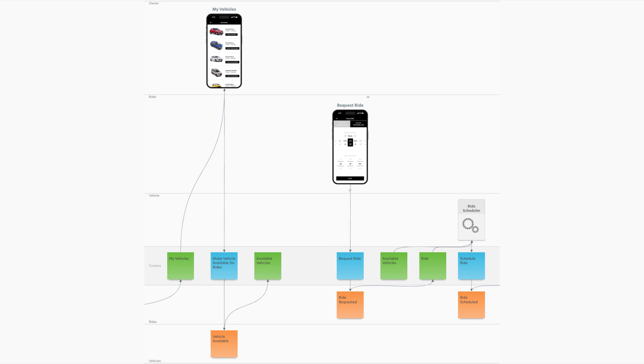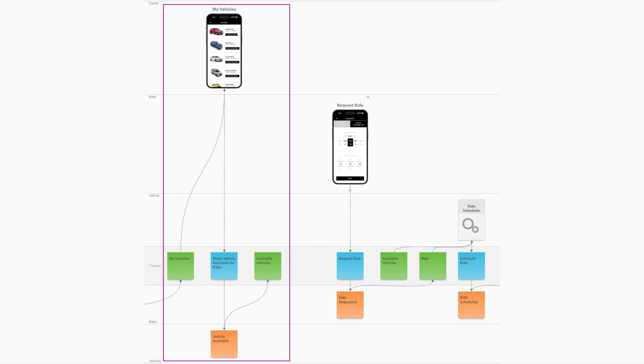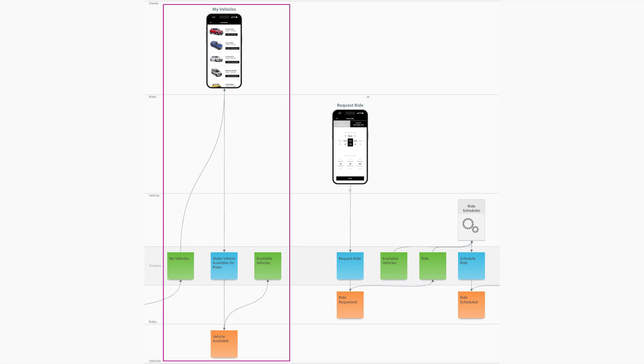Event modeling is different since it provides a very simple, visual, shared design language for capturing business requirements and mapping the user experience. For example, here we see two workflows for Autonomo: an owner making one of their vehicles available to provide rides, and a rider requesting a ride, which the system then schedules. For both of these workflows, we've made the user experience, user actions, data flow, and system automation evident and visual. The goal of this visual representation is to allow non-software stakeholders who know the business process best to understand and make meaningful contributions, while also being precise and specific enough to be directly mapped to particular software development tasks.